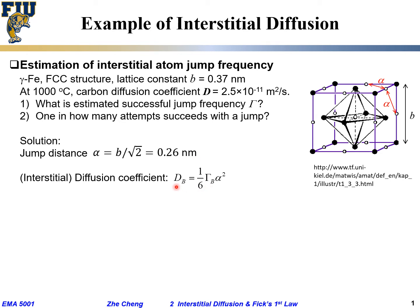What is D? D is given you. Diffusion coefficient we said it is 2.5 × 10⁻¹¹. α is what you calculated based on the lattice parameter. That's what we got. So we can calculate Γ, roughly, to be this.